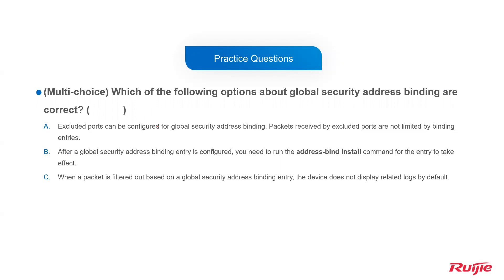Option C: When a packet is filtered out based on a global security address binding entry, the device does not display related logs by default. Yes, this is true — by default, no logs are generated. If you need logging, you must use the 'address bind filter login' command to enable this function. So this is about the working principle and application of global security address binding. Thanks for listening.